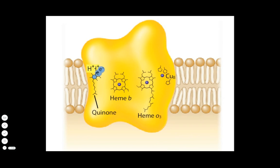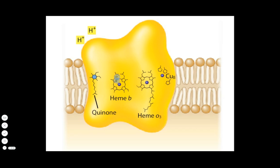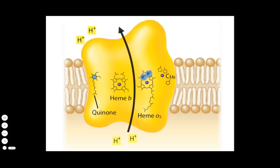The quinol transfers its electrons to the adjacent heme group and releases two protons, usually across the membrane. Next, the electrons move from the first heme group to the second. This unique complex couples the electron transfer between the two heme groups with proton pumping.